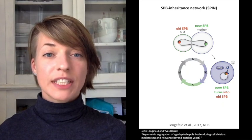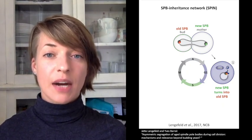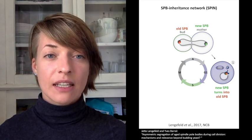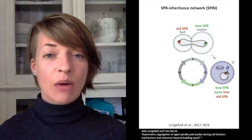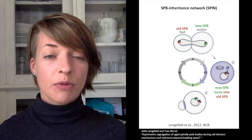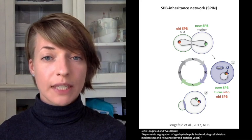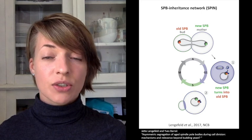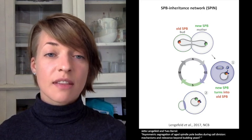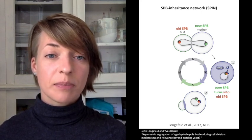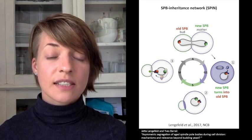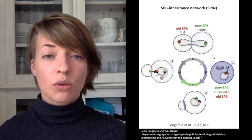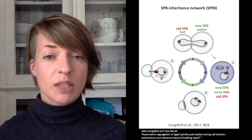In G1, SWE1 earmarks young spindle bodies inherited from the previous mitosis with a phosphorylation mark. This marks this spindle body now as being old. Before the completion of spindle body duplication, SWE1 is downregulated. This ensures that it only earmarks this pre-existing spindle body. The phosphorylation mark signals then downstream to the spindle positioning machinery that this old spindle body must orient towards the bud.